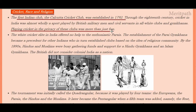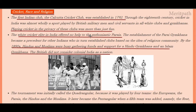The first Indian club, the Calcutta Cricket Club, was established in 1792. Through the 18th century, cricket in India was wholly played by British military men and civil servants in all-white clubs and gymkhanas. The white cricket establishment in India offered no help to enthusiastic Parsis, leading to the establishment of the Parsee Gymkhana, which became a precedent for other Indians who established clubs based on religious community. By 1890, Hindus and Muslims were busy gathering funds for a Hindu Gymkhana and an Islam Gymkhana, as the British did not consider colonial India as a single nation.